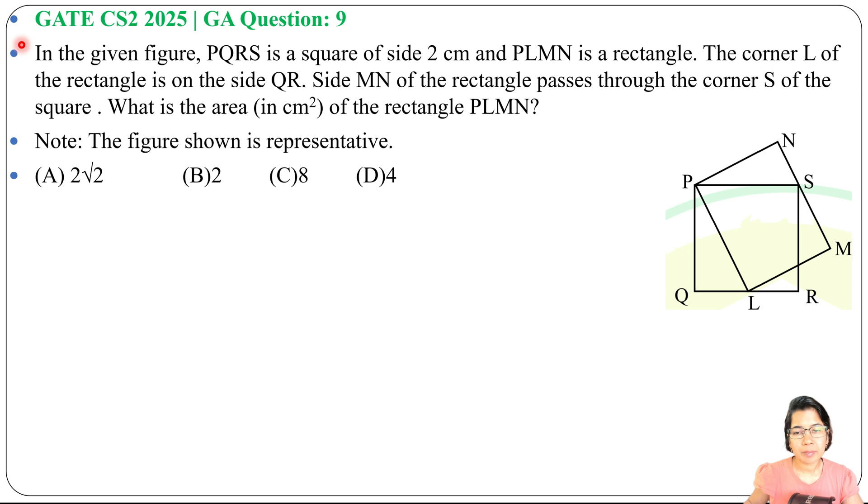Hey everyone, let us solve one previous question of general aptitude. This question was asked in GATE CA Set 2, 2025, GA question number 9. In the given figure, PQRS is a square of side 2 cm.